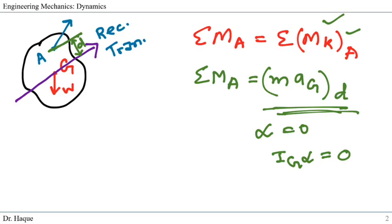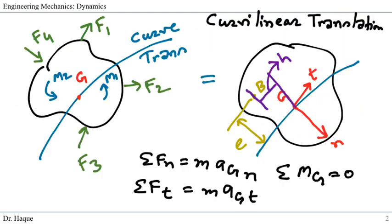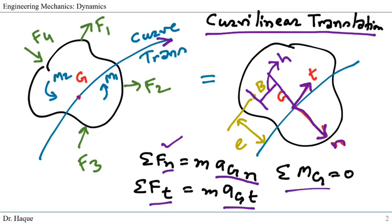Now we're going to see the same equation for curvilinear translation. The concept is almost the same as rectilinear. Instead of a rectilinear path we will have a curvilinear path. For curvilinear motion we need the tangential component and the normal component. So instead of Fx and Fy we will have F normal component which equals m times normal component of the acceleration, and F tangential component would be mass times tangential component of acceleration ag. Since there is no angular acceleration or no rotation, our Mg would be zero.